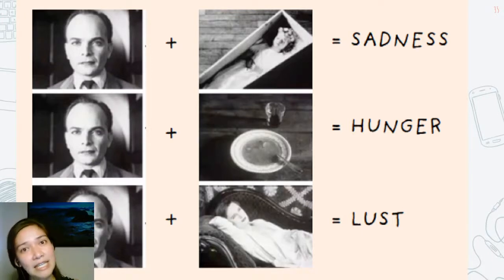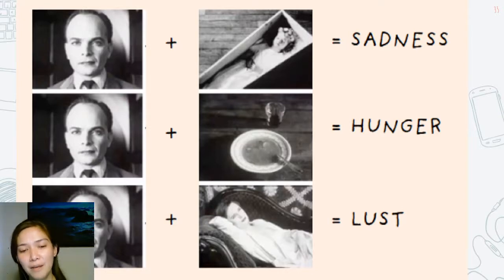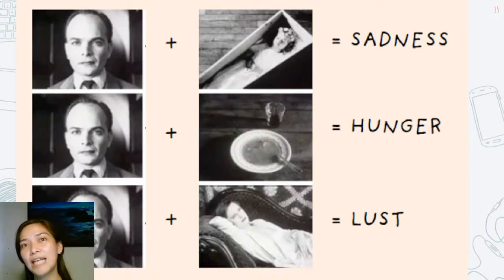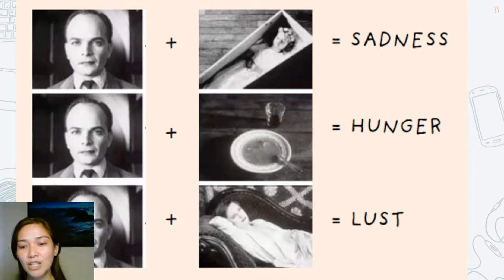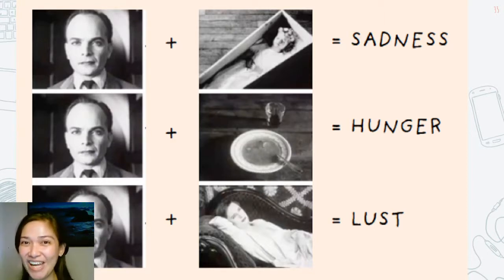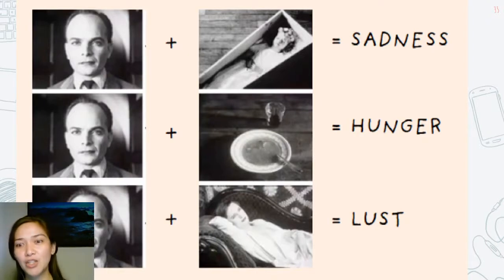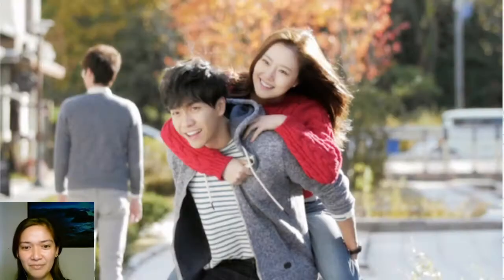The guy plus the coffin equals sadness; the guy plus food equals hunger; the guy plus the lady equals lust. This style of priming helps videographers and movie creators manipulate how their audience will feel when looking at something. It's to aid the actor's perceived feeling — it's just a neutral stimulus. I had actually just Googled 'poker face' for that image, and one student correctly wrote 'poker face.'